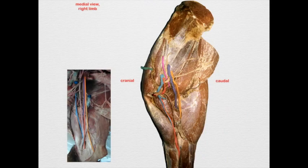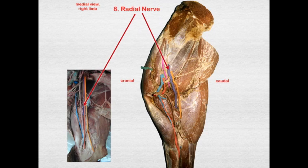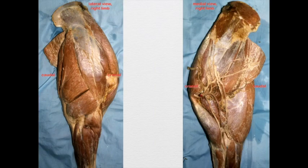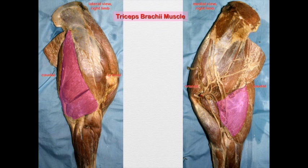Radial nerve, once again. Remember, the radial nerve is going to course deep in between the muscles of the triceps brachii and then go into the brachialis groove. As it comes around, as we saw in a previous film clip, it has a superficial and a deep branch. The superficial branch is primarily cutaneous, whereas the deep branch is going to innervate the muscles of the antebrachium.